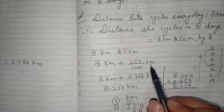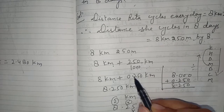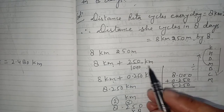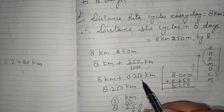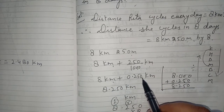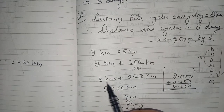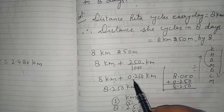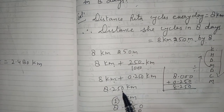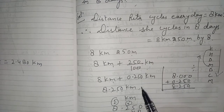Since the divisor is 1000, there should be three digits after the decimal. Write the numerator and put the decimal three digits from the right. So 8 km + 0.250 km = 8.250 kilometer. This is the distance in kilometers she cycles in one day.